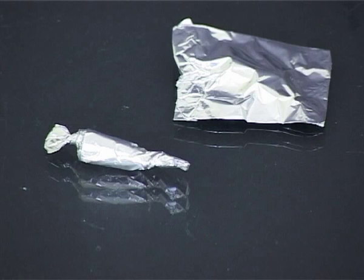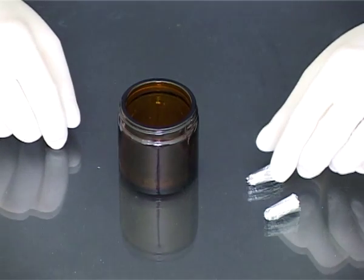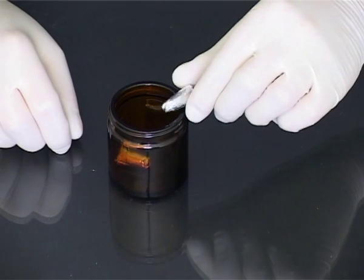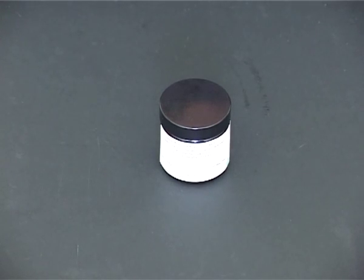These are examples of poorly wrapped suppositories. Once wrapped in foil, transfer the suppositories to an amber glass jar and label.